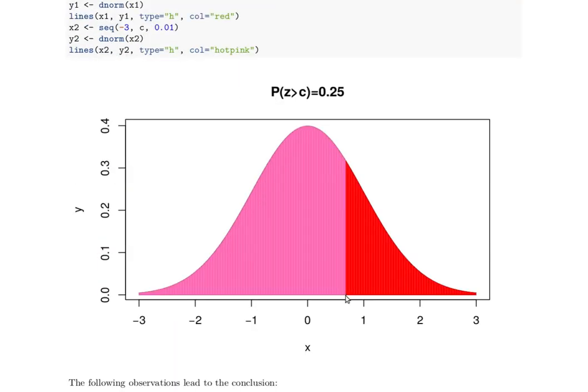So we're looking for this C value that's between this pink area and this red area where this red area happens to be 25% of the total area.